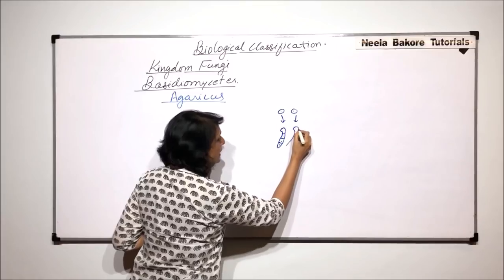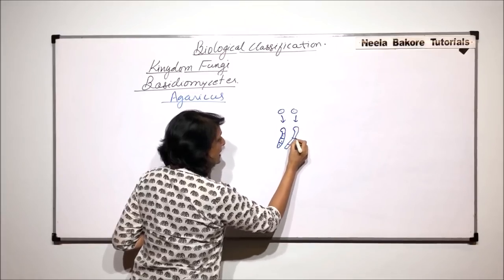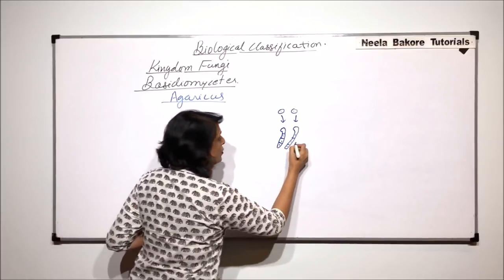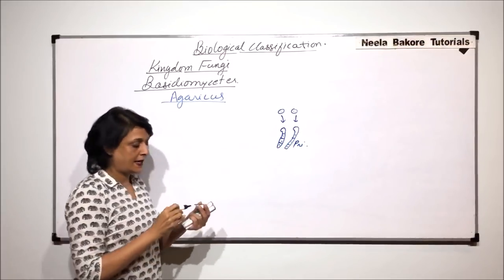There are two types of hyphae: positive strain and negative strain hyphae which are produced and these ones were called the primary mycelia.